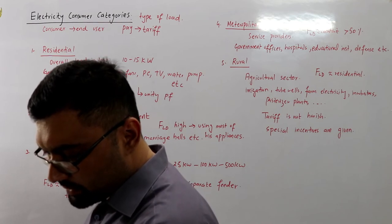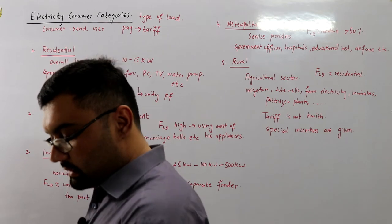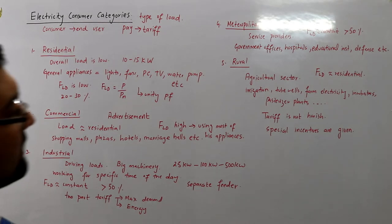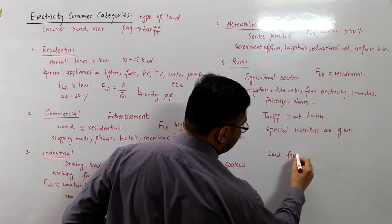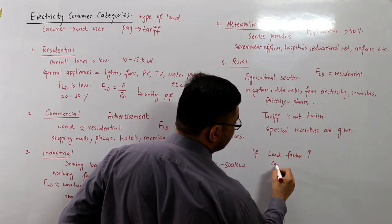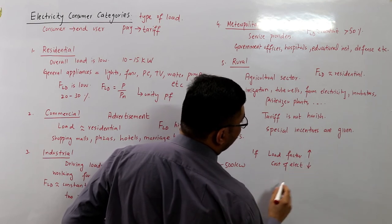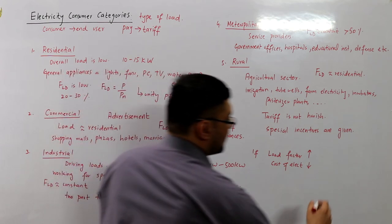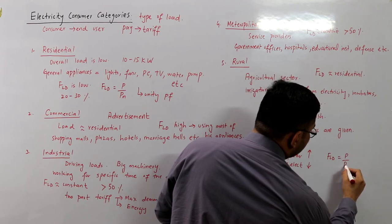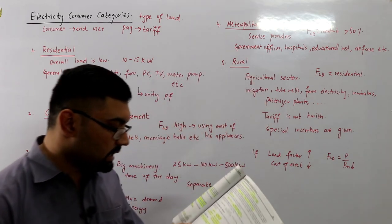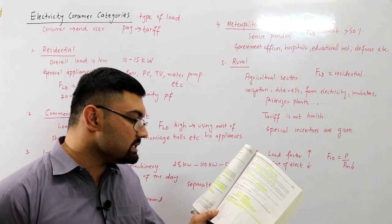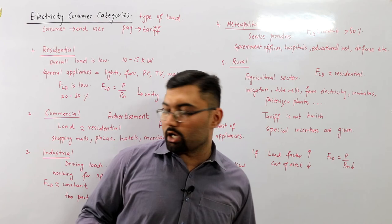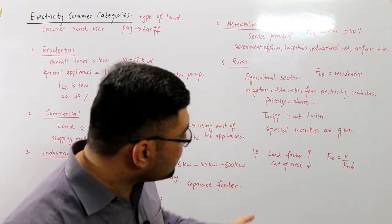An important additional point: if the load factor of the power station is high, the cost of electricity will be low. This is because a high load factor implies lower maximum demand. Since the station capacity is selected based on maximum demand, lower maximum demand means lower plant capacity, which in turn reduces the cost of the plant.